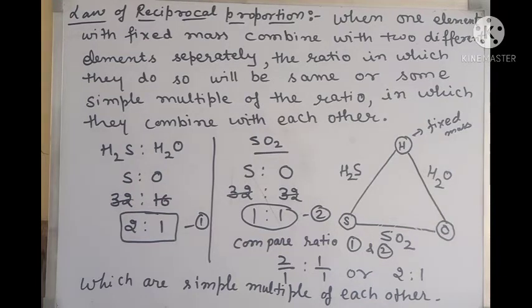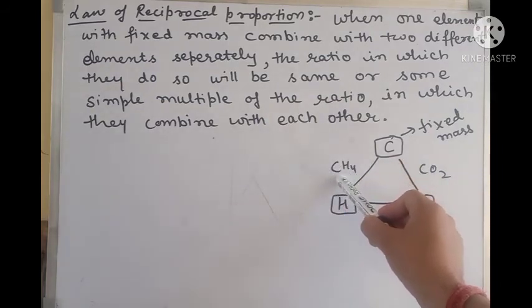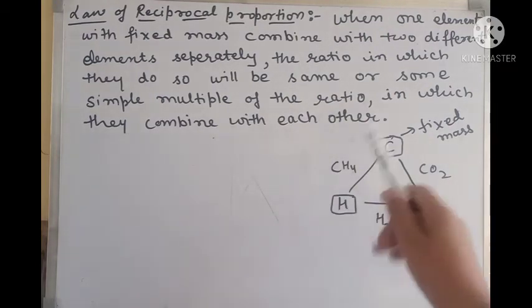This is an example of Law of Reciprocal Proportion. Friends, next example which we have taken uses three elements: Carbon, Hydrogen and Oxygen. In this example, the third element which has fixed mass is carbon. So carbon having fixed mass, when it combines with hydrogen forms CH4. When carbon combines with oxygen it forms CO2. This is carbon, 12 parts of carbon combined with 4 parts of hydrogen. Here is carbon, and 12 parts of carbon combined with 32 parts of oxygen. So here carbon has fixed mass.